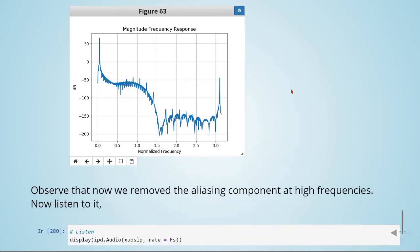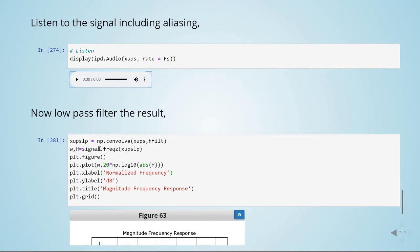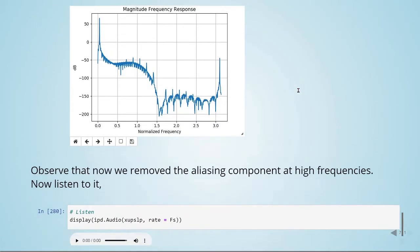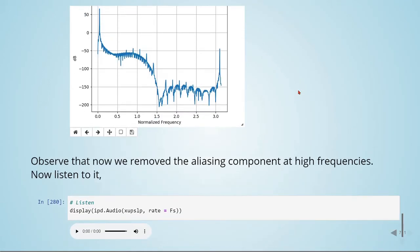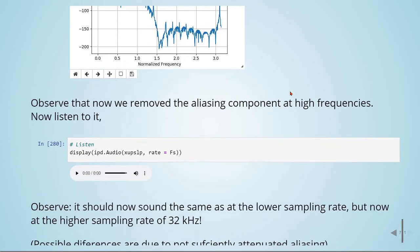This is the frequency response. We're using scipy signal convolve, convolving with the filter, doing the same what we did. Observe that now we remove the aliasing component at high frequencies.